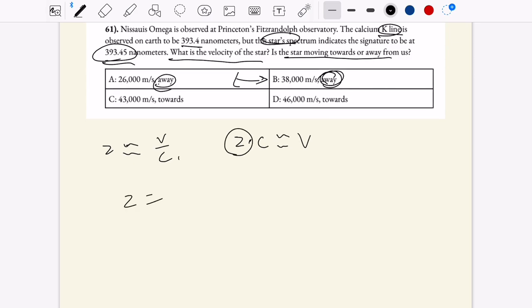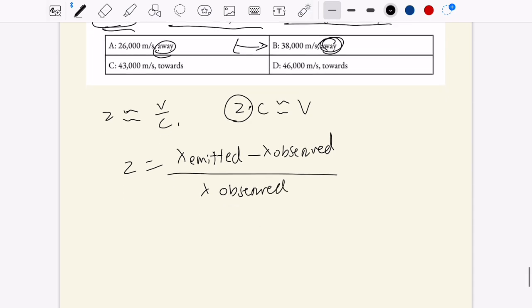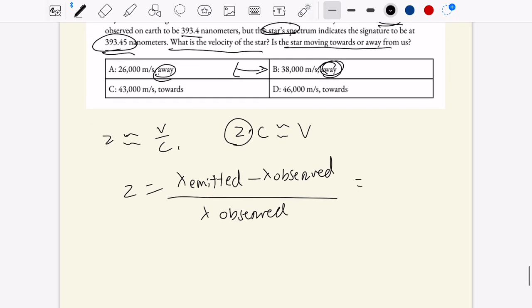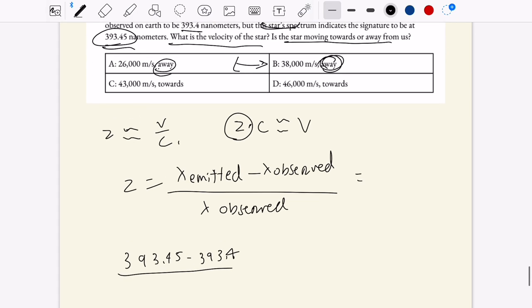So z is going to be equal to your lambda emitted minus lambda observed. This is like your stationary lambda all over your lambda observed. So then, that's going to be equal to 393.45 minus 393.4 divided by 393.4. And this is going to be equal to 1.27 times 10 to the negative 4. That's your z-shift right there.